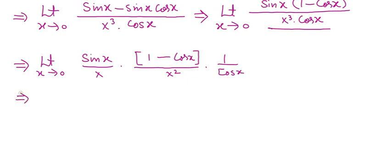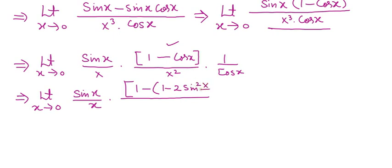Here, limit x tends to 0 of sin x over x. For the term 1 minus cos x, cos x may be written as 1 minus 2 sin squared (x/2). We have to use the half-angle formula here: x squared times 1 upon cos x.